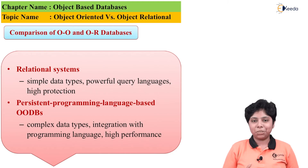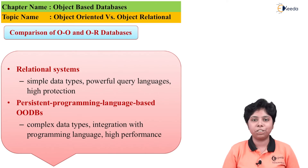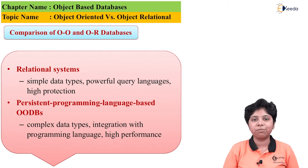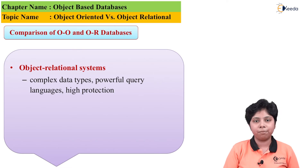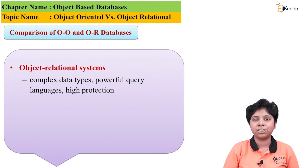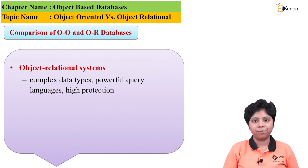Summarizing the strengths of each system: the relational schema has simpler data types, a powerful query language, and less computation time. The object-relational mapping provides complex data types, a powerful query language, and less computation time. The object-oriented database has complex data types, integrated features of persistent programming languages, and less computation time. The object-relational database provides a relational schema with an object layer on top and complex data types, but has high computation time.